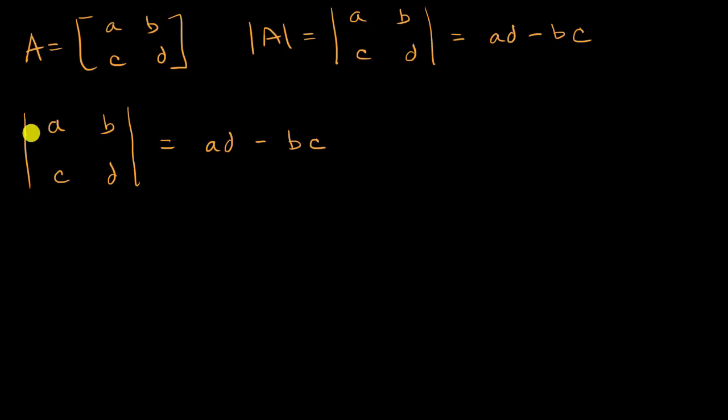Now if I were to multiply, let's say this first row by a constant K, how would that change the determinant? Well instead of this being just an A, this is now a KA. Instead of this being just a B, it is now a KB.